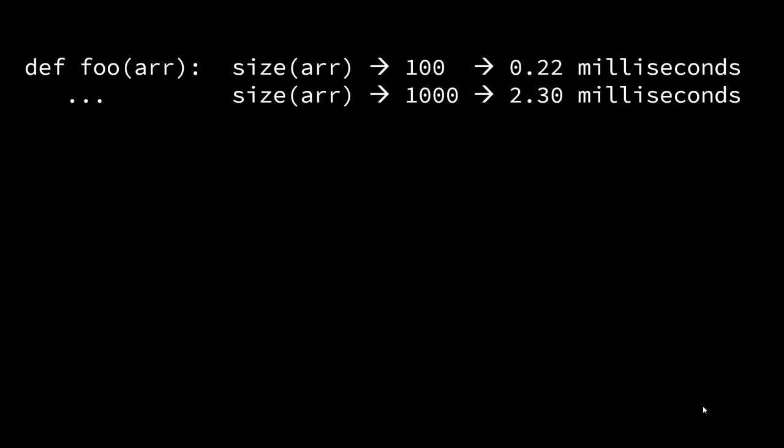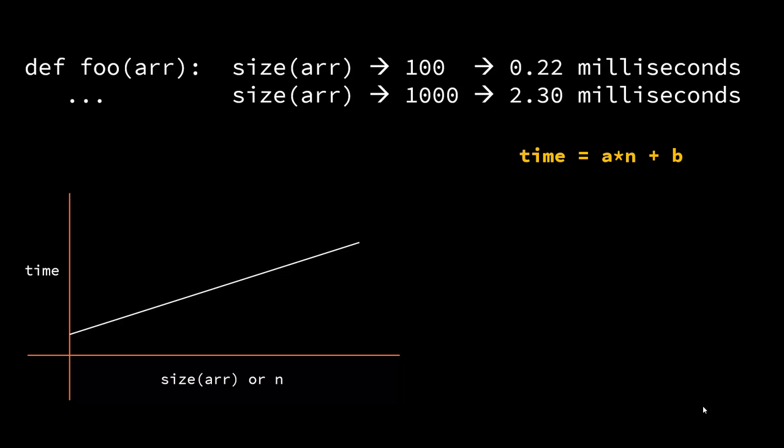So as the size grows the time also grows. And let's say this is the graph of size versus time. You can clearly see that it's a linear function. The time that it takes to run this program is linearly proportional to the array size, and any linear function can be represented as a × n + b.